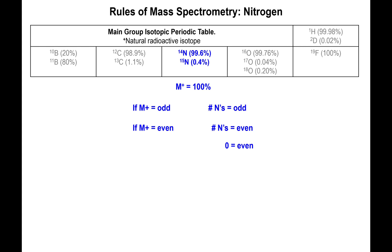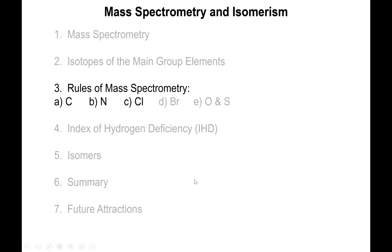Nitrogen giving odd molecular masses is actually unique and is used as a method of determining nitrogen content. The rule is: if the M+ mass is odd, you have an odd number of nitrogens — one, three, five, etc. If M+ is even, the nitrogen count must also be even, and zero counts as an even number. So an even M+ could mean zero, two, or four nitrogens. Odd equals odd; even equals even.